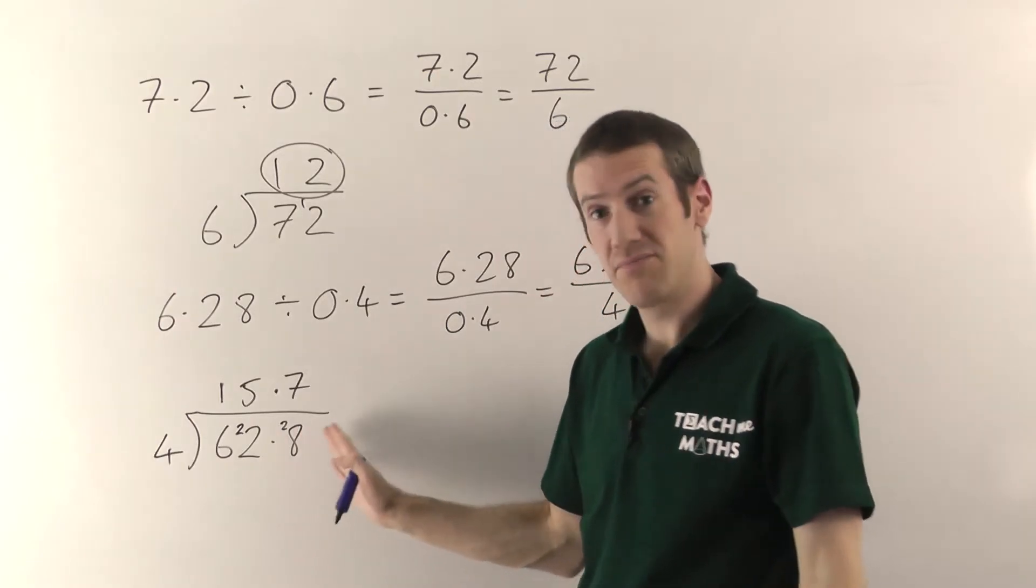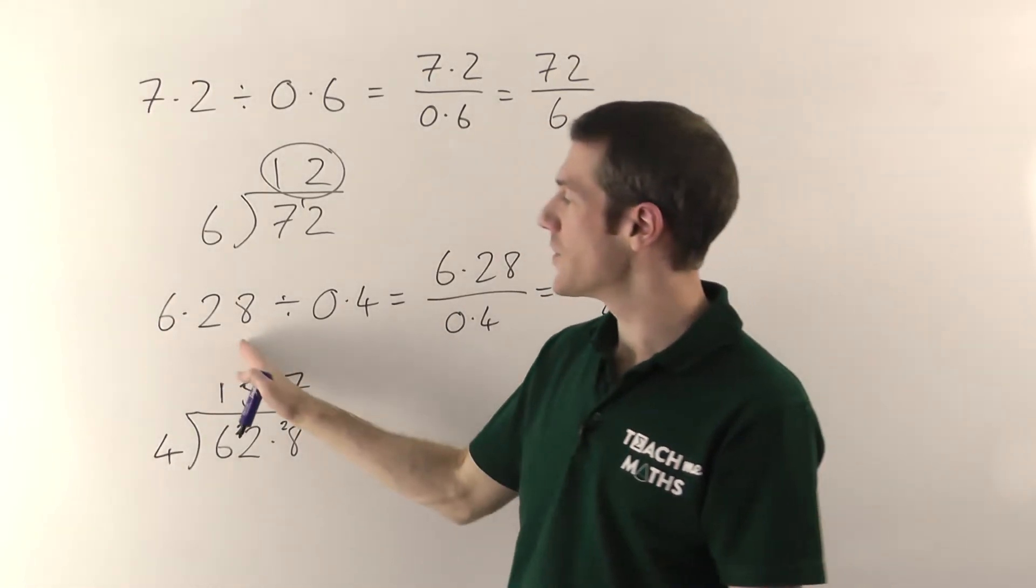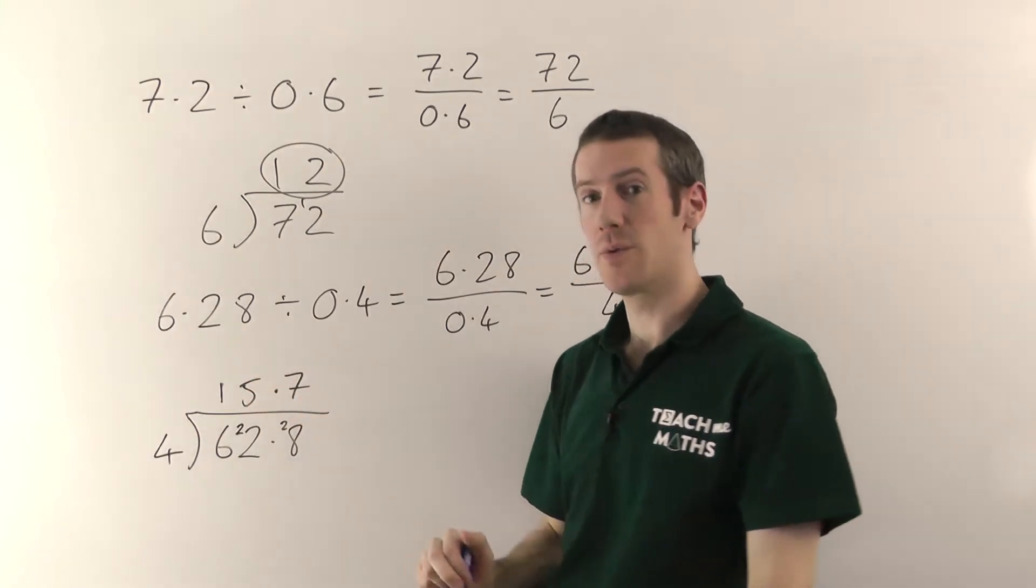As long as everything lines up properly, you'll be absolutely fine. So 6.28 divided by 0.4 is 15.7.